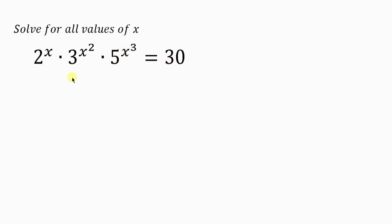Looking at this question, we can easily guess the value x equals 1, because 2 times 3 times 5 gives us 30. But remember, the question says solve for all values of x — that means there are other solutions. So let's find those other solutions.